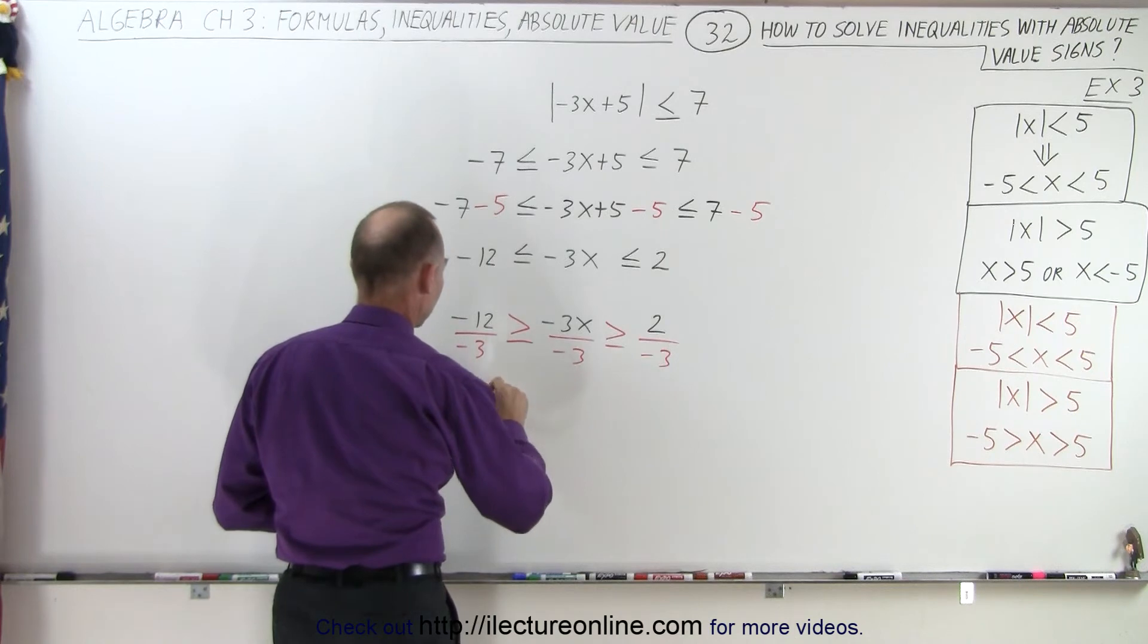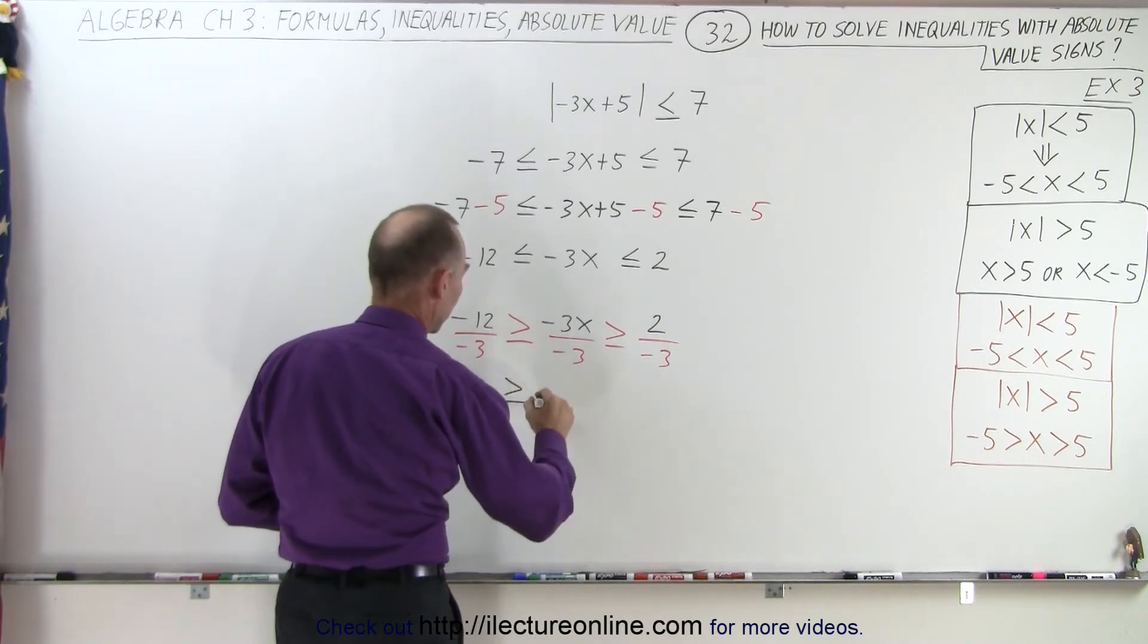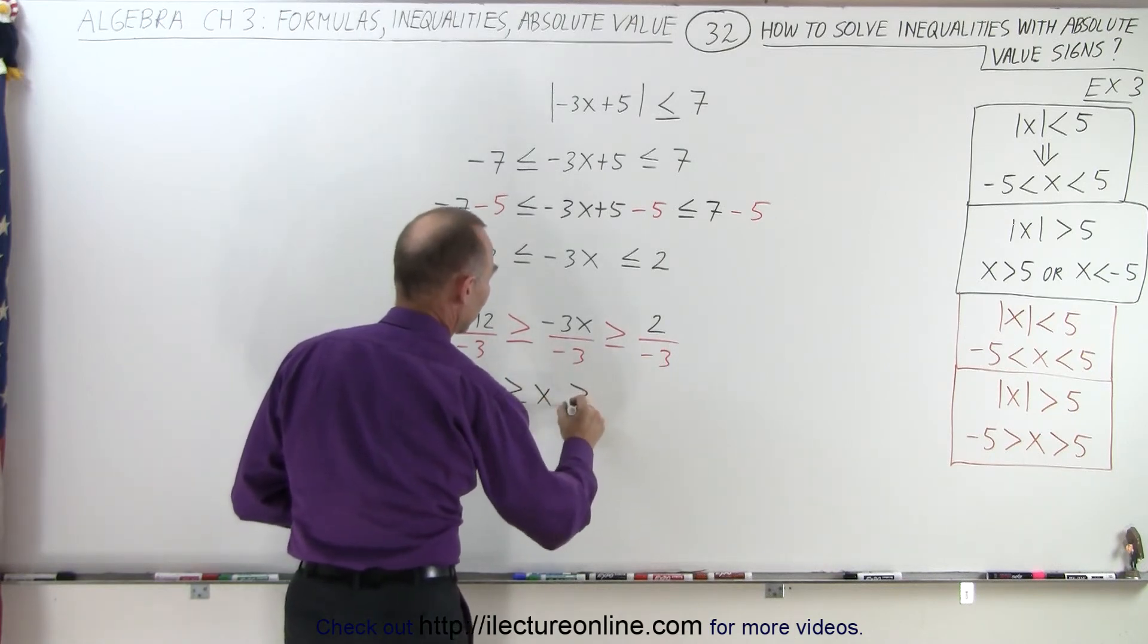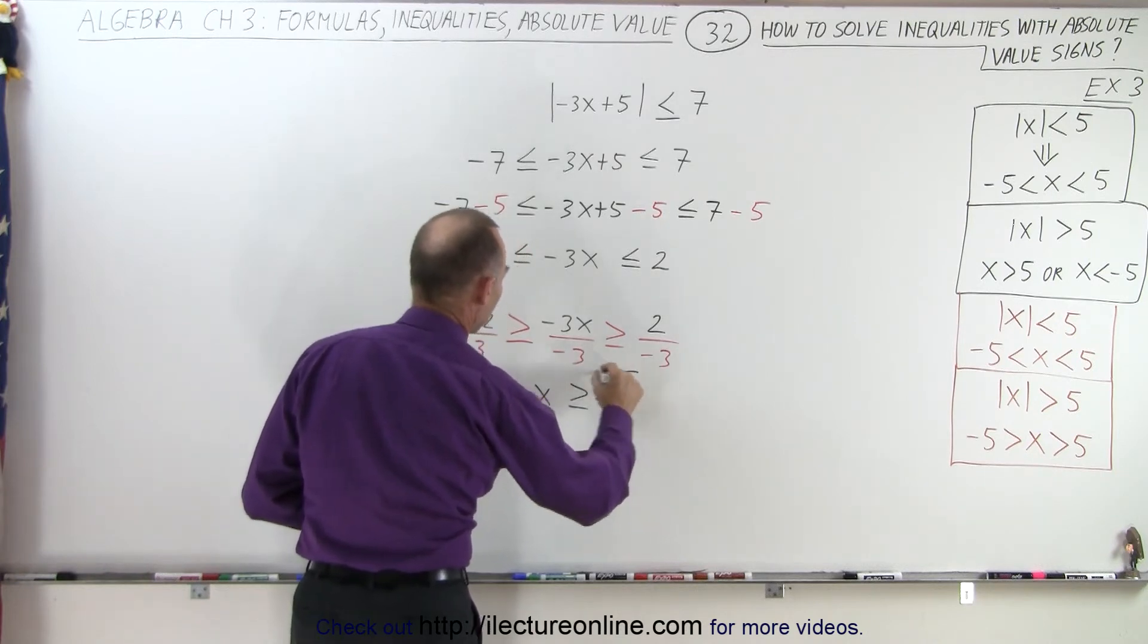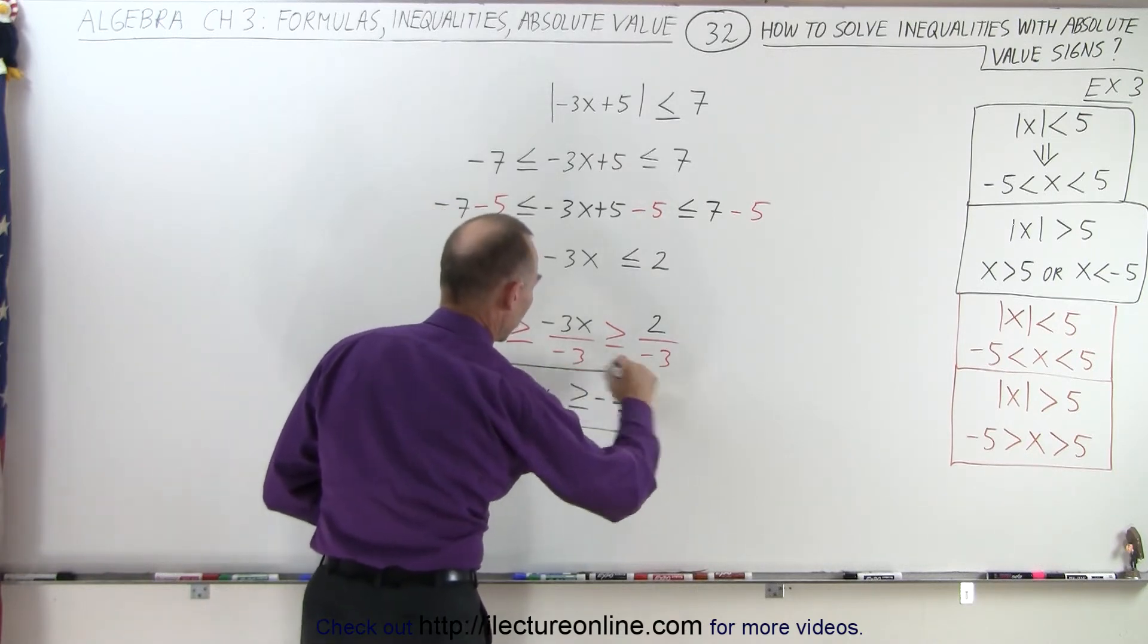On the left side, we end up with a positive 4, greater than or equal to a positive x, greater than or equal to a negative 2 thirds. And that would then be the solution to our problem.